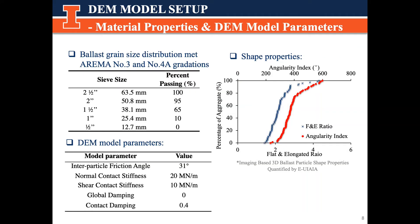This slide summarizes some material properties of ballast particles in the DEM models. The ballast grain-size distribution met AREMA No. 3 and No. 4 gradations. The ballast particles generated in the DEM models also follow the typical angularity index and flat-and-elongated ratio distributions, which are obtained by UIAIA and image scanning system. Some verified model parameters including inter-particle friction angle, stiffness, and damping are summarized in the bottom table.